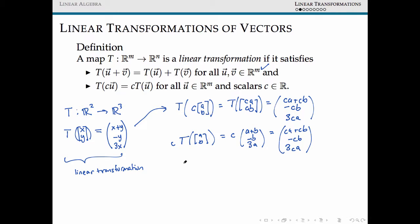So our map satisfies this second property of linearity, and a map of this form must be linear. So this is a linear transformation.